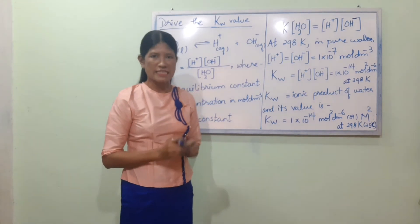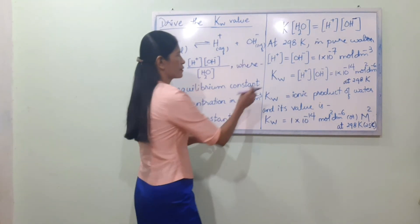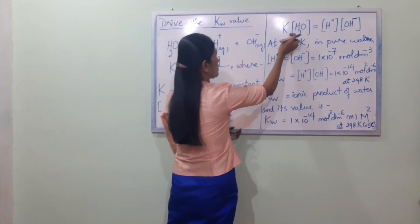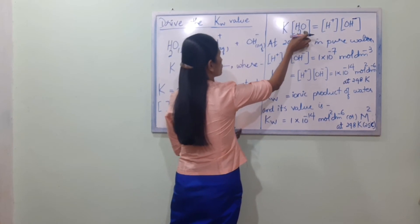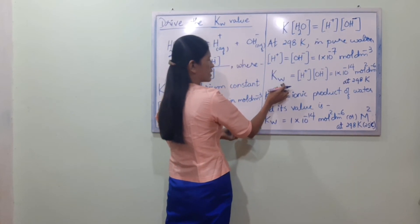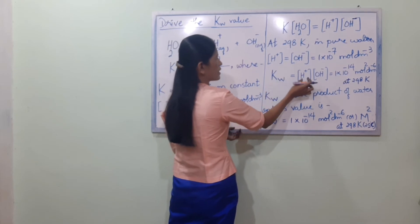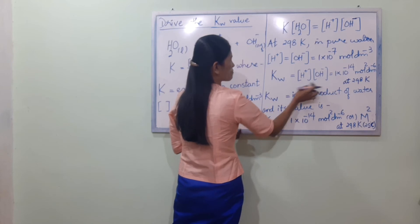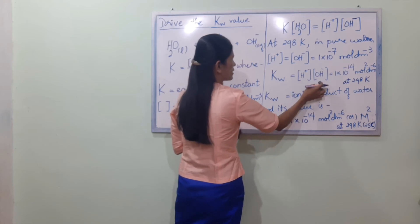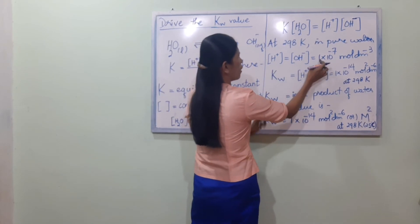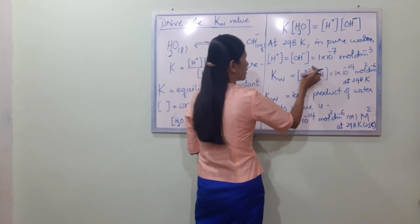The concentration is equal to KW. KW is equal to H⁺ ion concentration times OH⁻ ion concentration. Each concentration equals 1×10⁻⁷ mol dm⁻³.